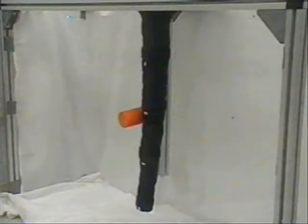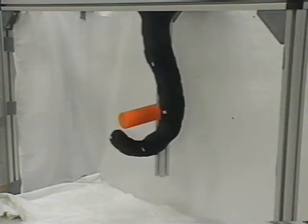This example is of obstacle avoidance and is one of the many possible benefits of the redundancy possessed in tentacle robots.